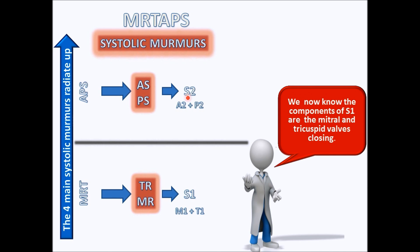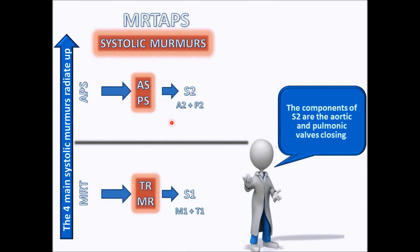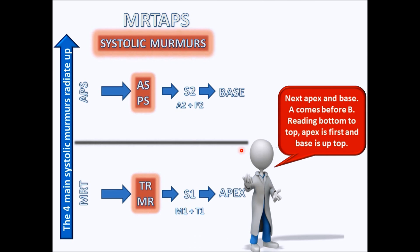That's why when they say you have splitting of S2, they mean the aortic valve and the pulmonic valve are not closing at the same time. Also, you might forget which is the apex and which is the base during a test. Since A comes before B, the apex is going to be down here and the base is going to be up top.